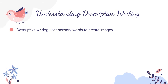Descriptive writing uses sensory words to create images. Sensory words are words that have to do with your senses — they stimulate your senses. They get you to think about tasting something, feeling something, seeing something, hearing it. Those are all your senses. And smelling something — all five senses.